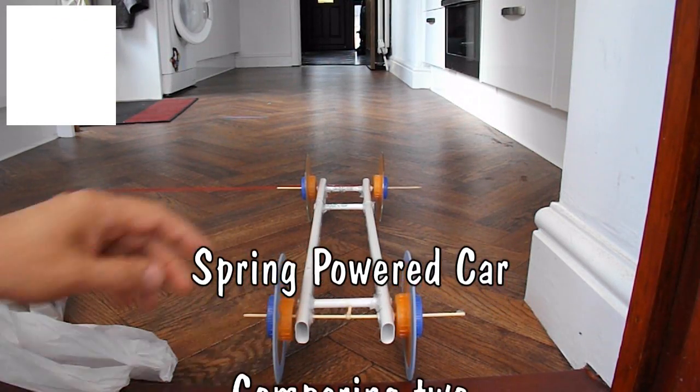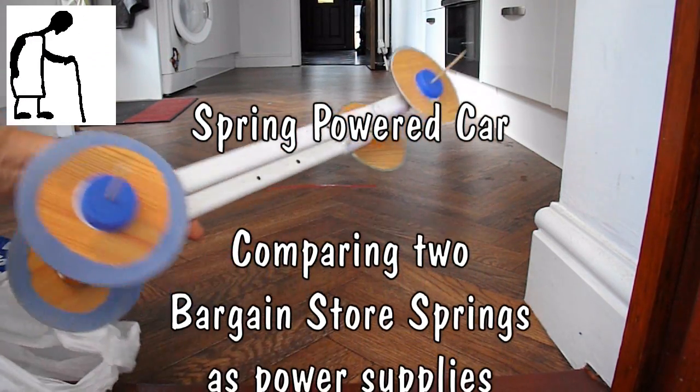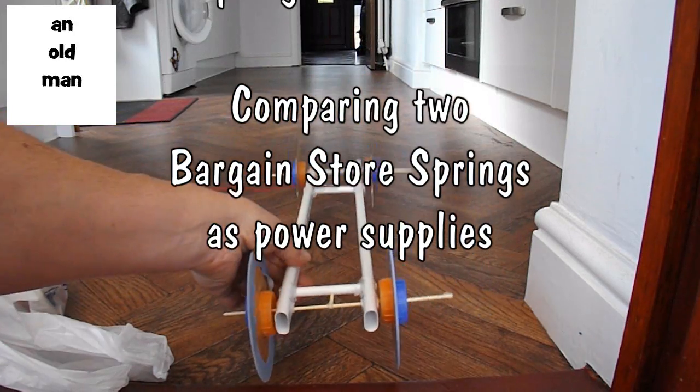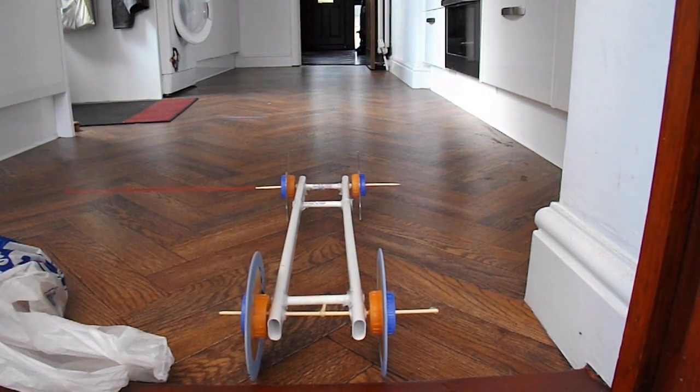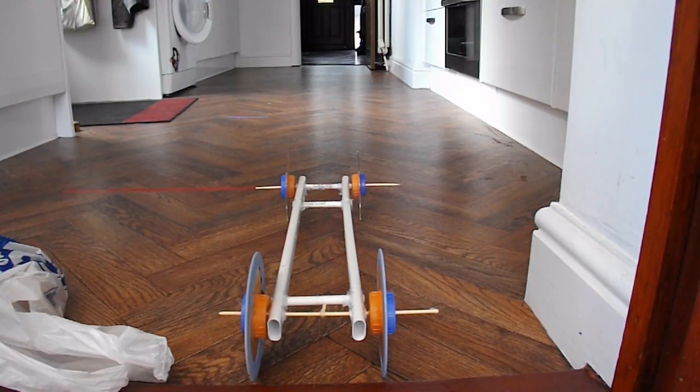Hi guys, I dug out one of my old rubber band powered car chassis to use as a test bed for a little idea I had for a clockwork operated car, or at least it was a wind-up spinning top.